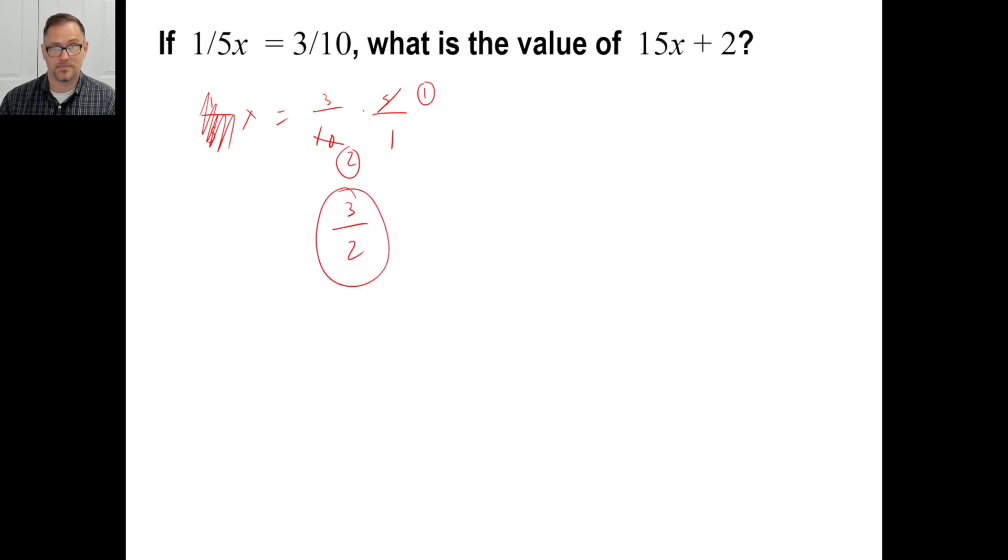Okay. Right there? Okay. So the value of 15x plus 2, that's just going to be 15 times x, 3 over 2, plus 2. Okay. Well, 15 times 3 is 45 over 2, plus 2. Let's just make it into a common denominator, right? 2 is the same thing as 4 over 2. So 45 plus 4 over 2 would be 49 over 2. And in the back of your book, they might even have, like, this is an answer, like 24 and 1 half. That's fine. Either one of those is fine.